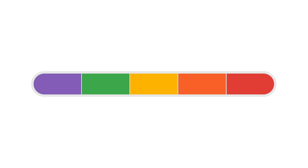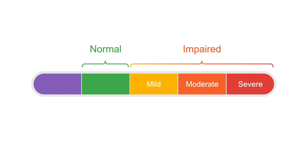Ventricular function should be described as normal or impaired. Where myocardial contraction is more pronounced than normal, the term hyperdynamic is applied, although this is not necessarily synonymous with normal function.